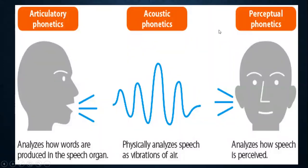Now look at this picture for a better understanding of the concept. Articulatory phonetics deals with the physiological function of language. Human beings are able to produce sounds with the help of speech organs such as vocal cords, larynx, etc. Acoustic phonetics physically analyzes speech as vibration of air — it is the study of physical properties of sounds, which are determined by measuring pitch, loudness, and quality. Auditory phonetics deals with the hearing of speech sounds and speech perception — the way sounds are heard or interpreted.